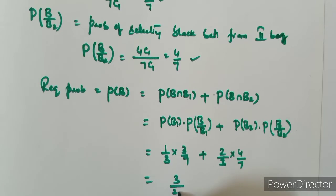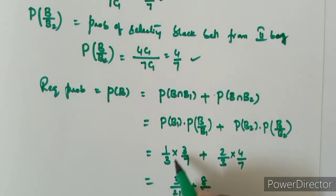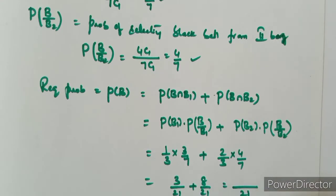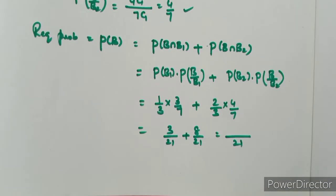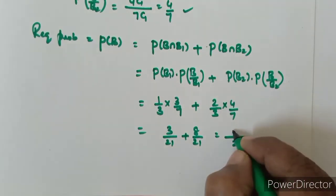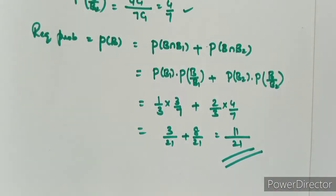So, P of B1 is 1 by 3, P of B given B1 is 3 by 7, P of B2 is 2 by 3, P of B given B2 is 4 by 7. We get 3 by 21 plus 8 by 21. Taking LCM as 21: 3 plus 8 equals 11. The required probability is 11 by 21.